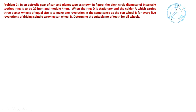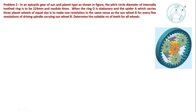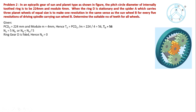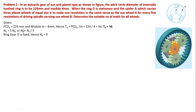The drawing shows a sun gear, 3 planet gears, and an internal toothed ring gear. The internal gear is fixed, the sun gear B is the driving gear, and the 3 planet wheels are carried by the spider (arm). Given data: pitch circle diameter of the internal wheel D is 224 mm and module is 4 mm.